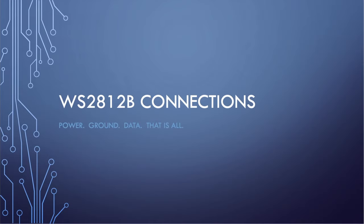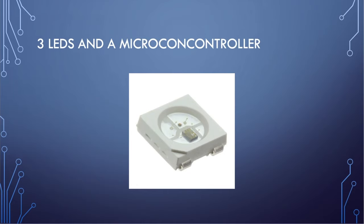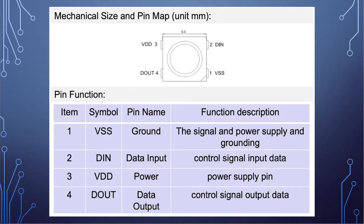Let's have a look at WS2812B connections. There's really only three connections: power, ground, and data. Those are in service of three RGB LEDs — a red, a green, and a blue — and an actual little microcontroller chip built in. This is a zoomed-in view of one single LED. The data line is connected to the microcontroller, and it in turn controls the LEDs. You don't talk to the LEDs directly at any point. There's a square wave data signal that comes in the DIN line and goes out the DOUT line on pin 4. Pins 1 and 3 are power and ground.